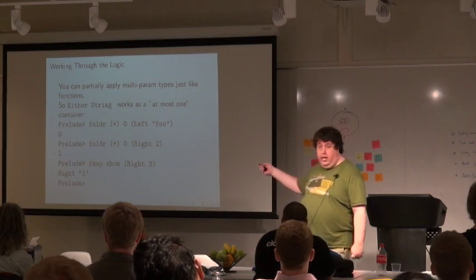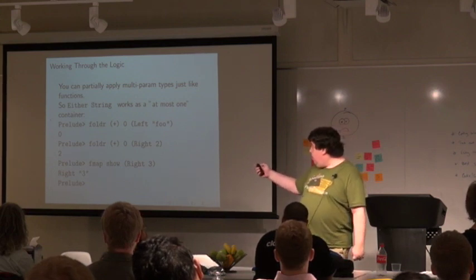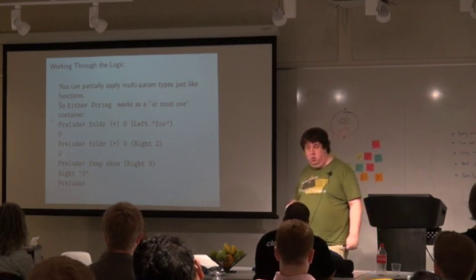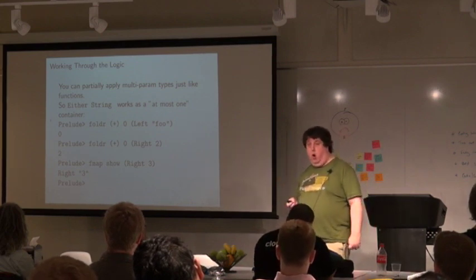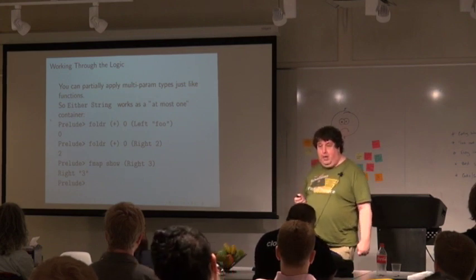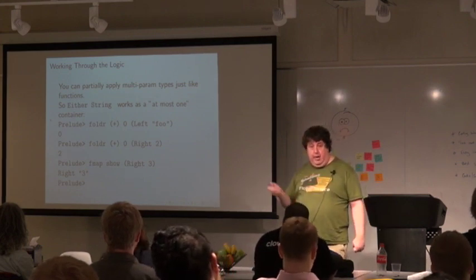So, for instance, I can go either string. So, either here is a type that takes two parameters. I apply, partially apply one string to it and now I get a type that takes one parameter and it acts exactly